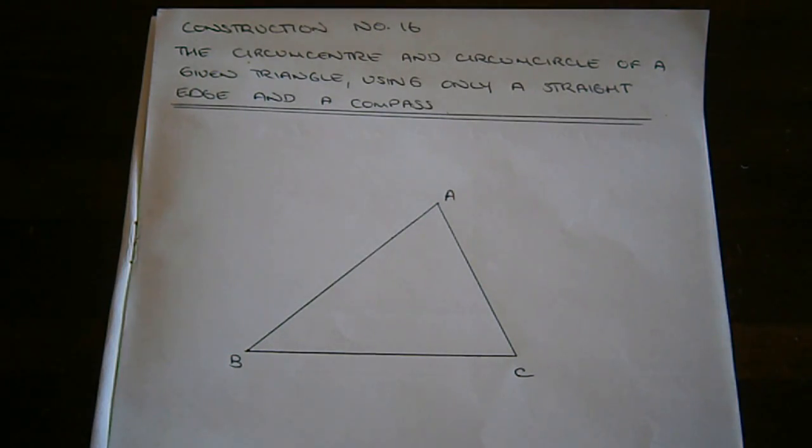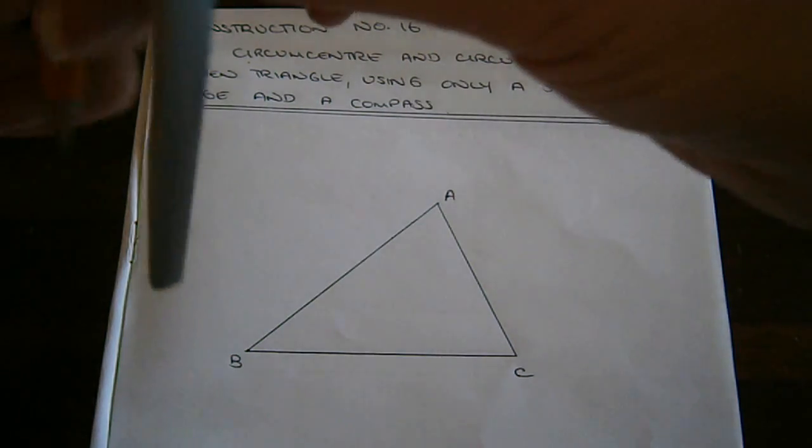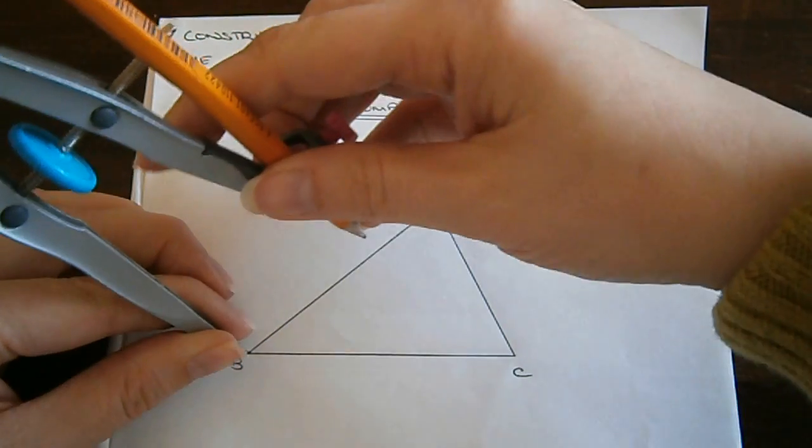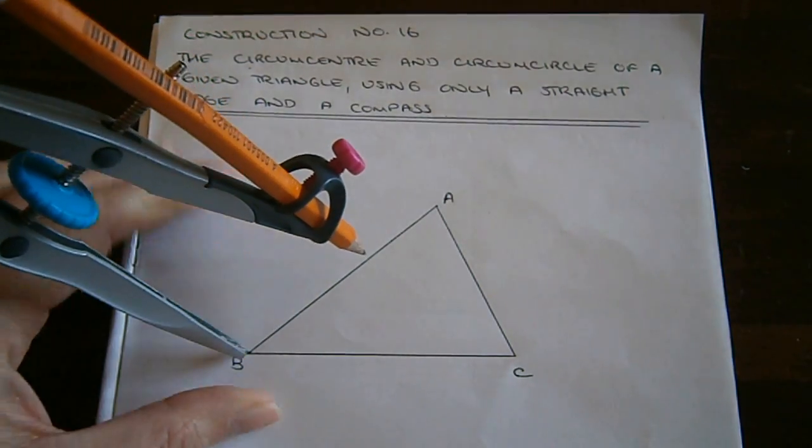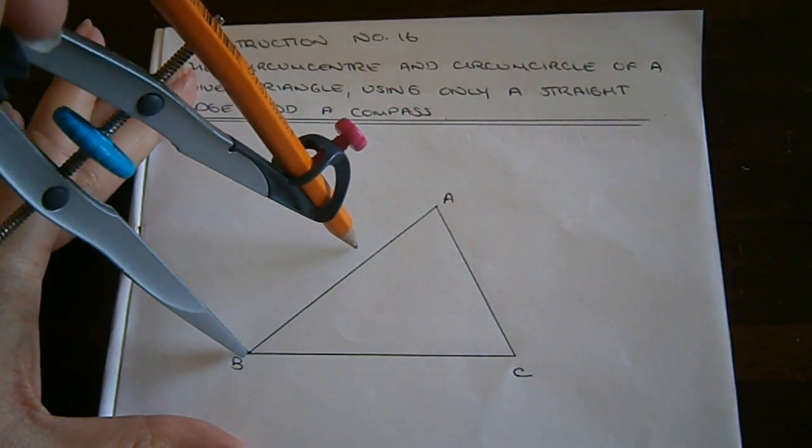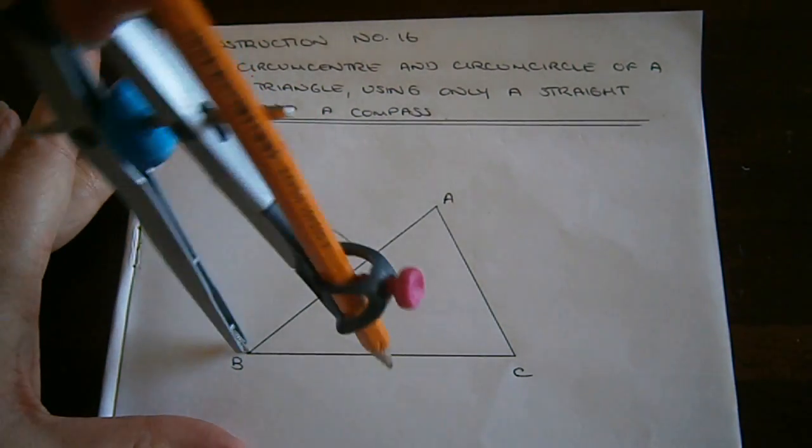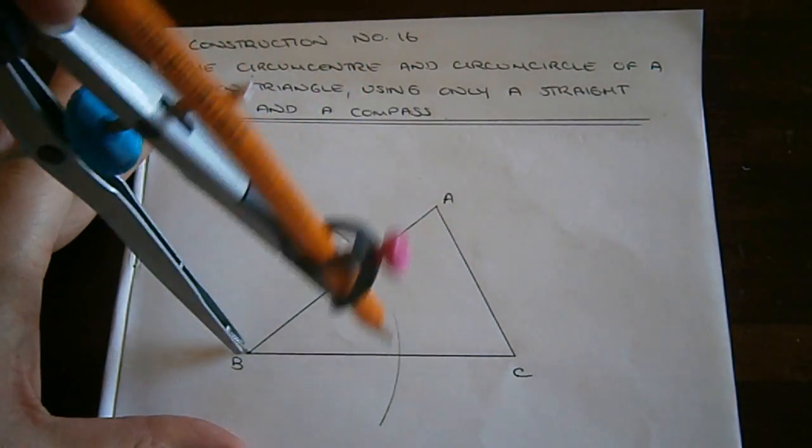So let's take the first side, AB. I draw an arc that's greater in length than half the width between A and B on either side of AB.